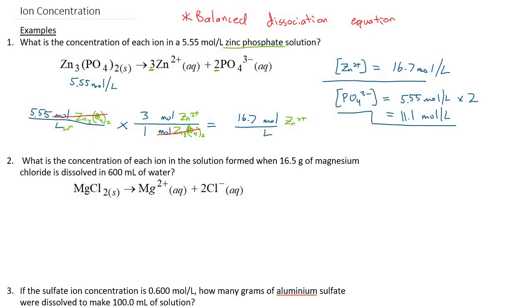Notice that here we are not starting with concentration. The only information we're given is 16.5 grams and 600 mils of water. Let me do a quick sketch of how I'm going to solve this problem. I want to start with my number of grams of magnesium chloride, use that to figure out how many moles of magnesium chloride I have, and then find the concentration. Once I know the concentration of magnesium chloride, I can use the mole ratio to find the concentration of the ions.